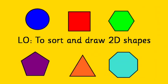Our learning objectives today are to sort 2D shapes and to draw 2D shapes. If we were at school, we would have lots of colourful 2D shapes to sort and special equipment to help us draw them. Since some of you at home might not have the same equipment, I'm going to direct you to some websites where you can have a go at sorting and drawing shapes. Let me show you what the sorting activity will be like first, then I'll direct you to the website.